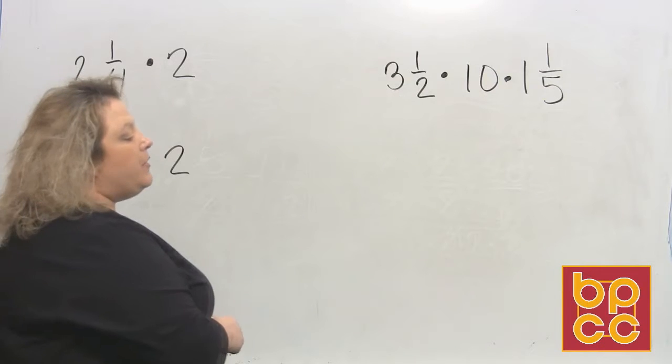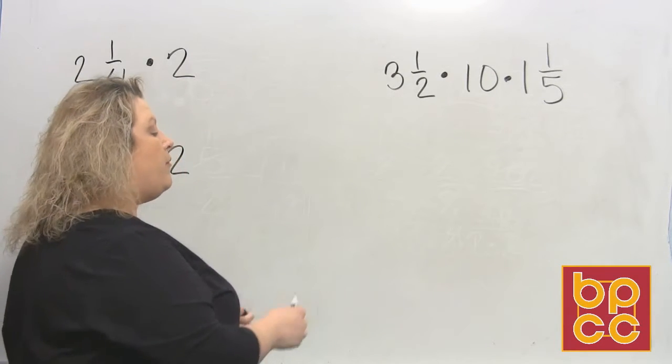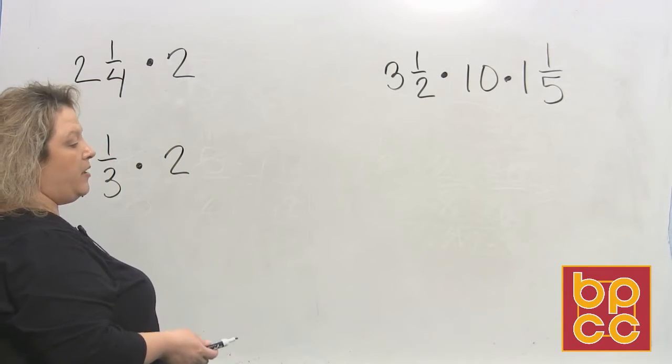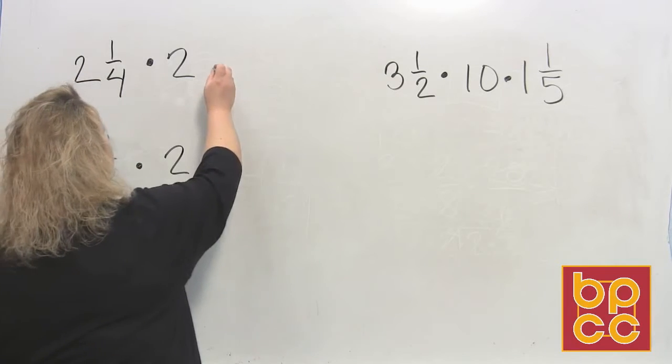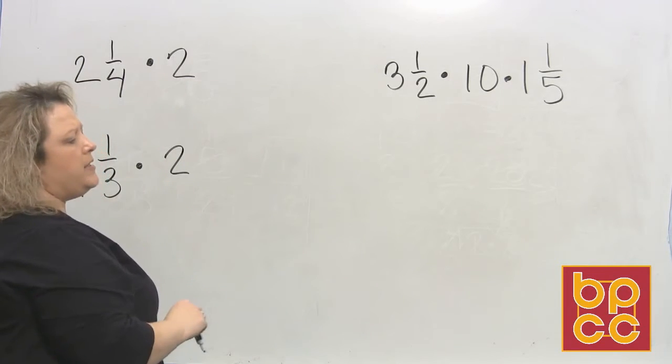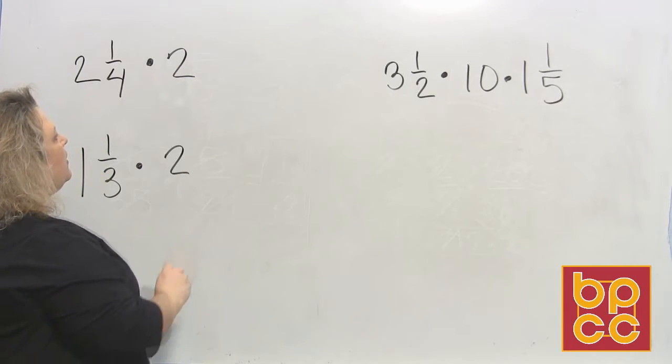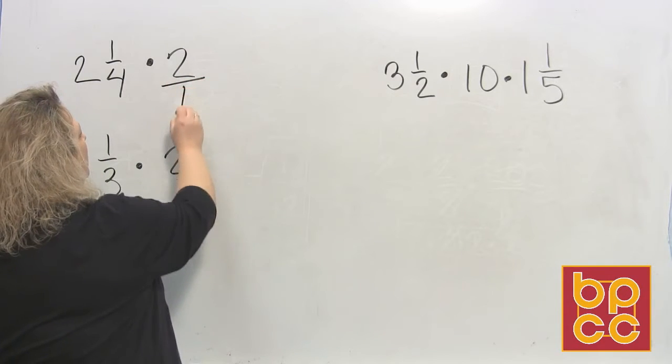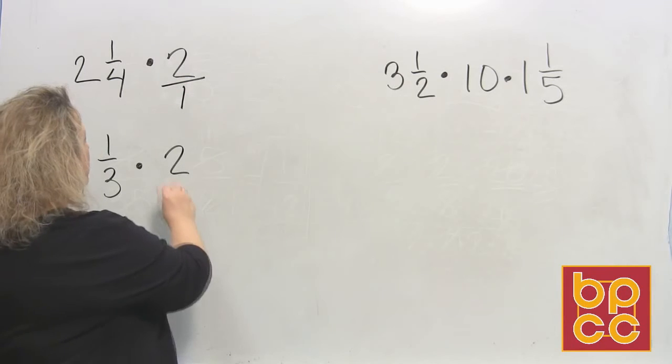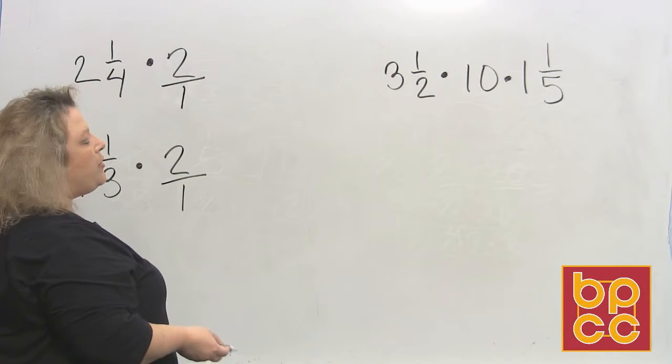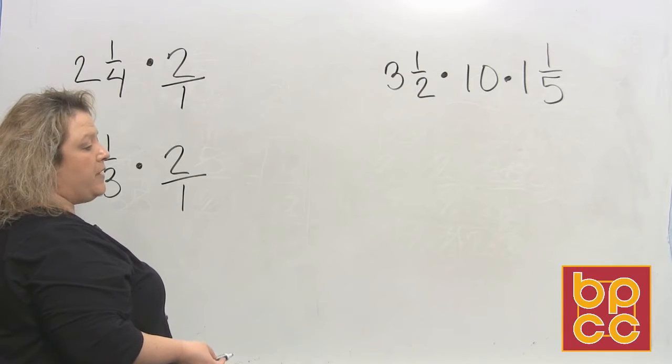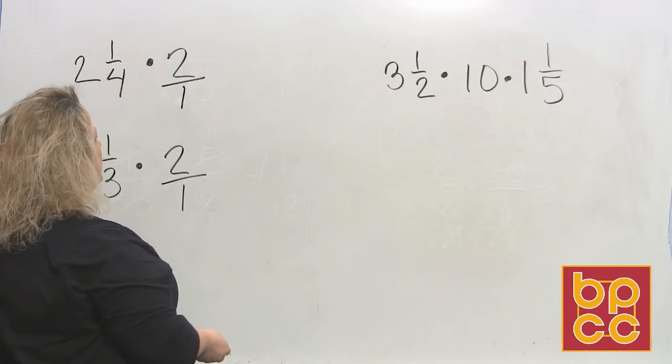If we have 2 and 1/4 cups of brown sugar and we want to double that so that we can make a bigger recipe, there's a couple of things that we have to do. The first thing you need to understand is that the whole number 2 has an understood 1 in the denominator. So every time you see a whole number you want to automatically put a 1 in the denominator when you're going to do multiplication or division, because it makes it easier to deal with.